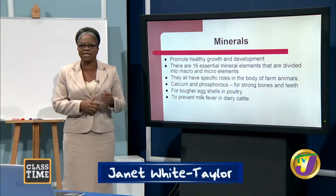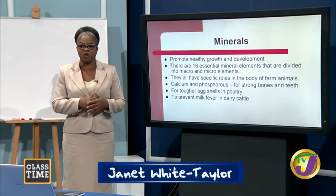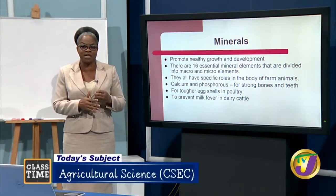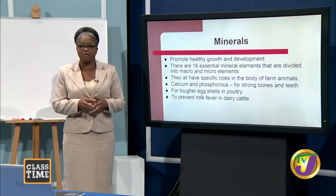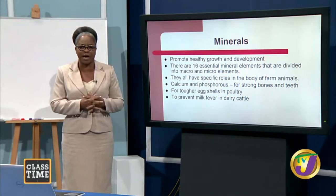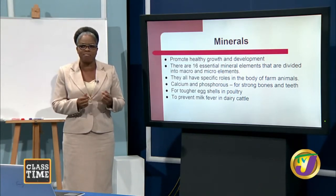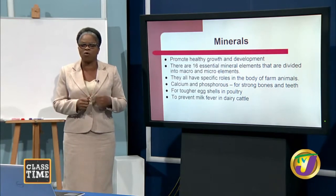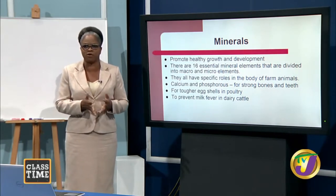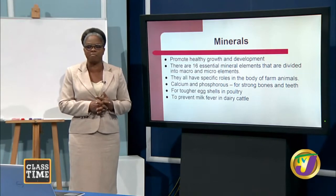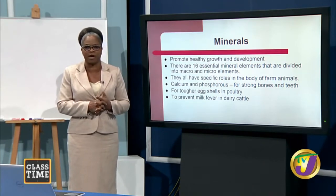Looking at calcium and phosphorus specifically: when animals have these minerals, they will have strong bones and teeth. For poultry, they produce stronger eggshells that will not break easily. For dairy cattle, calcium and phosphorus help prevent milk fever.